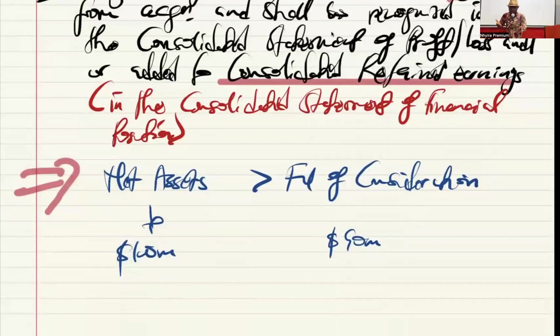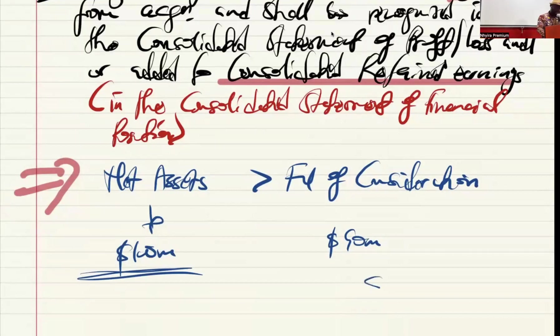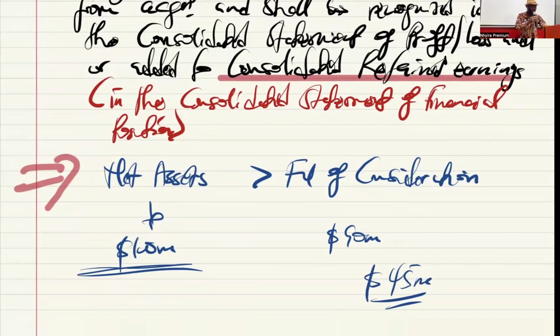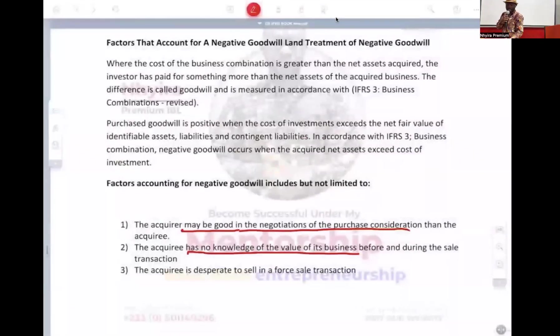But that is the second thing. The owners of the business do not even know the value of the business because probably it's just a family business. They've not been serious about it. And they are like, oh, we just want to get rid of this business. So although the value of the business is $100 million, they have no clue. So guess what? We got there and they said we'll give you people $45 million. Then they are like, oh, $45 million? That's okay. We got a deal. We go away. That's the second reason.